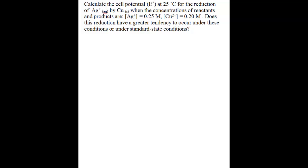You're also asked if this reduction has a greater tendency to occur under these conditions or under standard state conditions. I'm going to cross out the standard notation symbol in the problem because that indicates the standard cell potential, but what we're really calculating is the cell potential under non-standard conditions. To find that, the first thing you need to do is find the balanced redox equation and the cell potential under standard conditions.